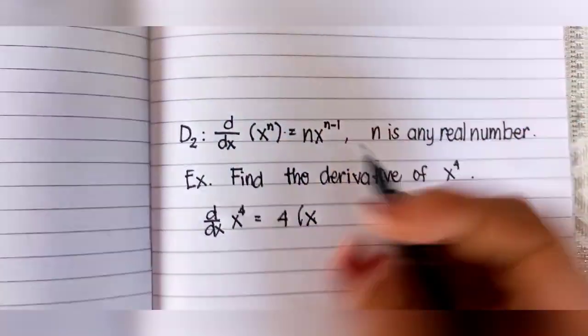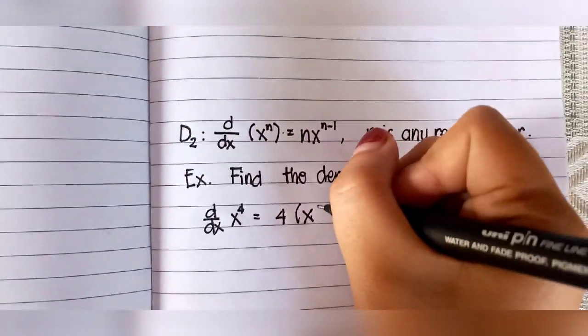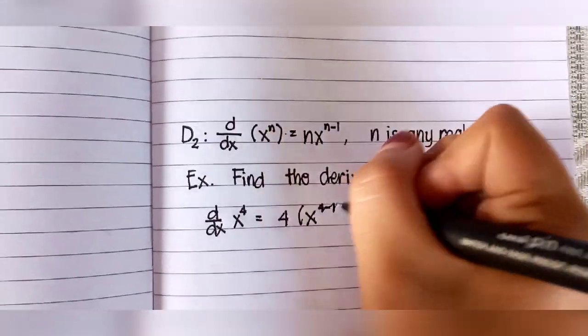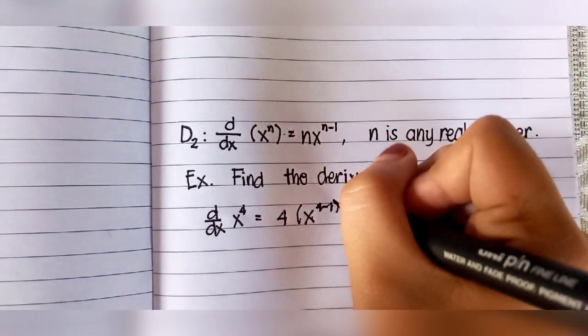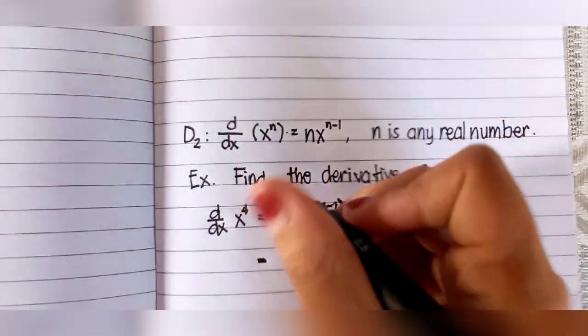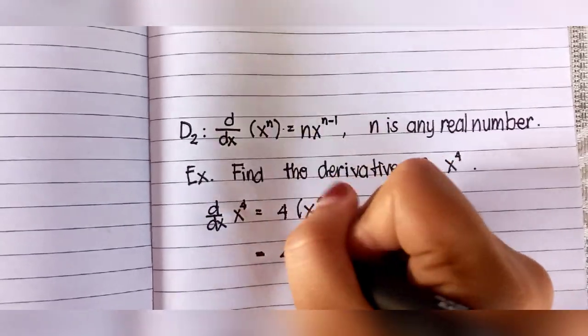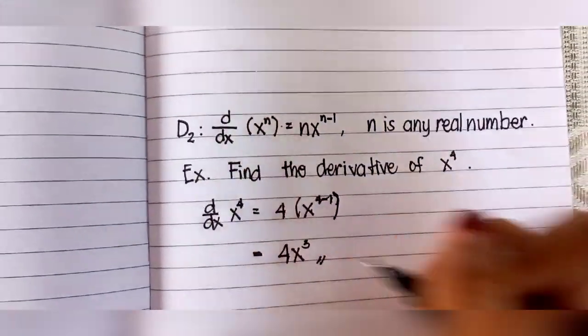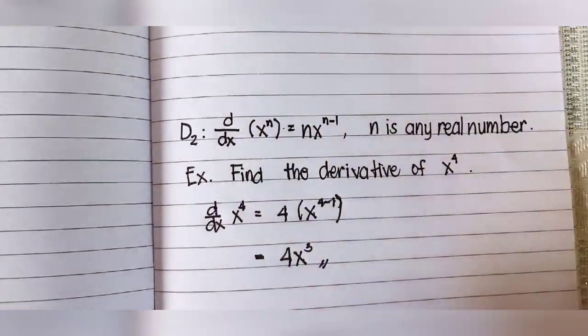This equals 4, which is the N, and X raised to N minus 1, which is 4 minus 1. So our final answer will be 4X raised to 3.